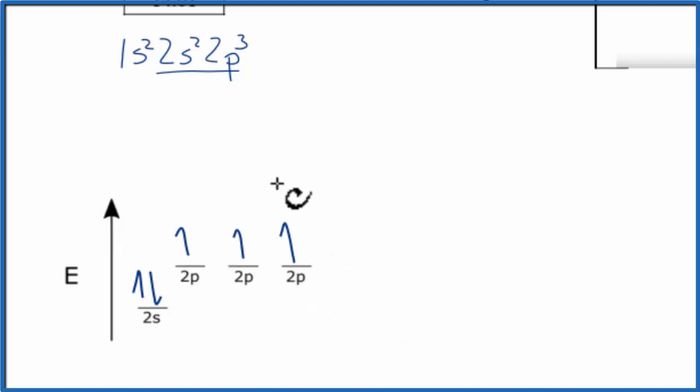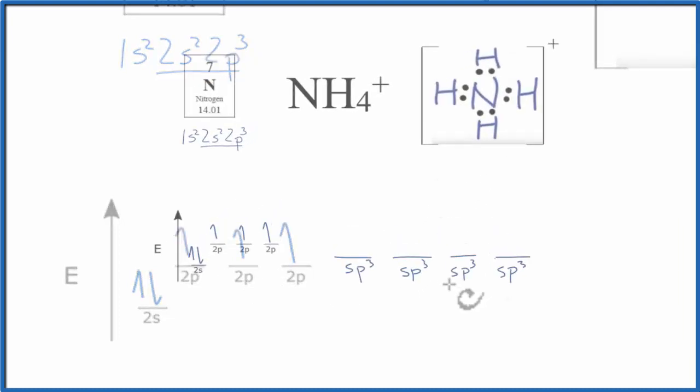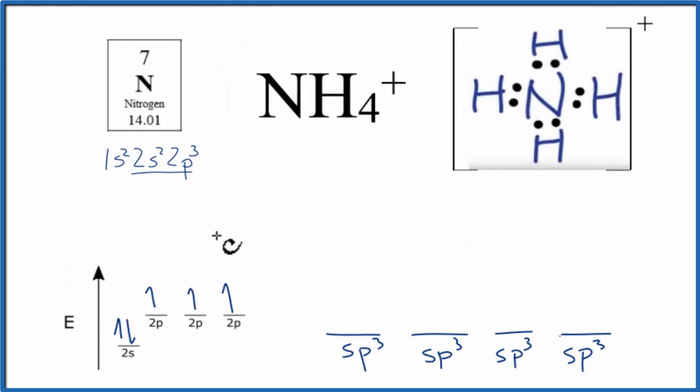So these are going to mix together. They're going to hybridize to form four equal hybridized orbitals. And those will be those sp3 orbitals we talked about. So we have these five electrons, 1, 2, 3, 4, 5.